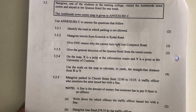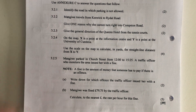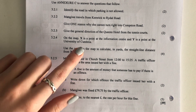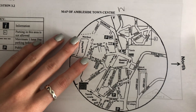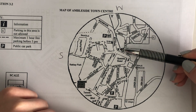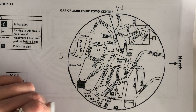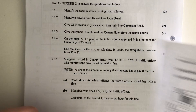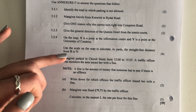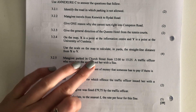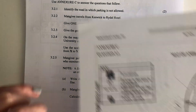These next couple of questions require a little bit more. It says: on the map, X is a point at the information center and Y is a point at the University of Cumbria. So let's make sure we know where we're at — there's X at the information center, and Y at the University of Cumbria. The question draws that line for us so we don't have to draw it ourselves. We know we're going to have to measure it. Use the scale on the map to calculate in yards the straight line distance from X to Y.